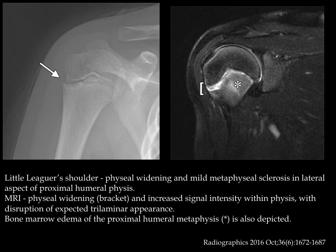Here is another fairly common injury in pediatrics — this is little league shoulder. We can see asymmetrical widening of the proximal humerus laterally and some sclerosis along the physis. On MRI we also see widening of the growth plate as well as some bone marrow edema in the proximal metaphysis.